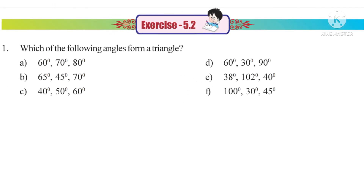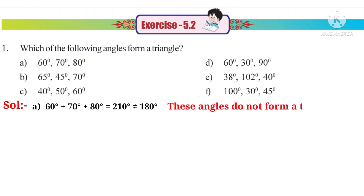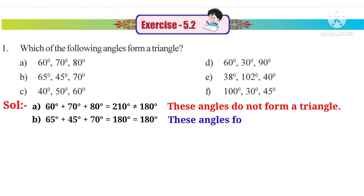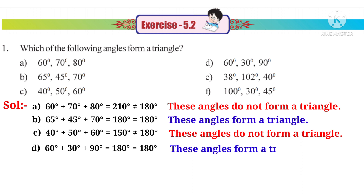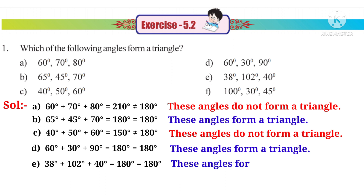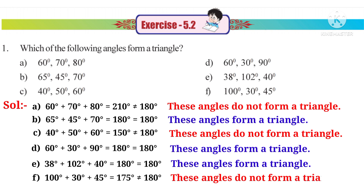Now let us do Exercise 5.2, Problem 1: Which of the following angles form a triangle? (A) 60° + 70° + 80° = 210° ≠ 180°, so these do not form a triangle. (B) 65° + 45° + 70° = 180°, so these angles form a triangle. (C) 40° + 50° + 60° = 150° ≠ 180°, so these do not form a triangle. (D) 60° + 30° + 90° = 180°, so these form a triangle. (E) 38° + 102° + 40° = 180°, so these form a triangle. (F) 100° + 30° + 45° = 175° ≠ 180°, so these do not form a triangle. Angles in B, D, E form a triangle.